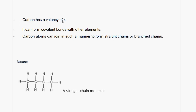Carbon has a valency of 4. It can form covalent bonds with other elements. Carbon atoms can join in such a manner to form straight chains or branch chains.